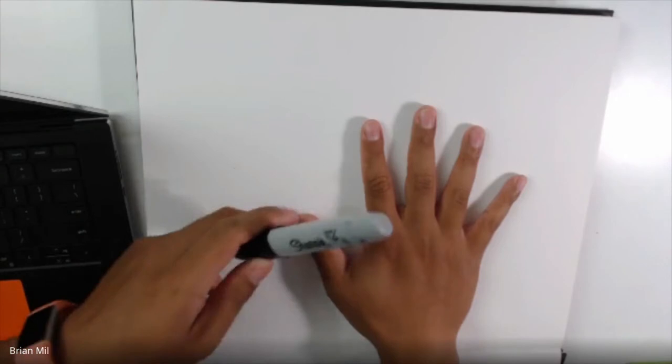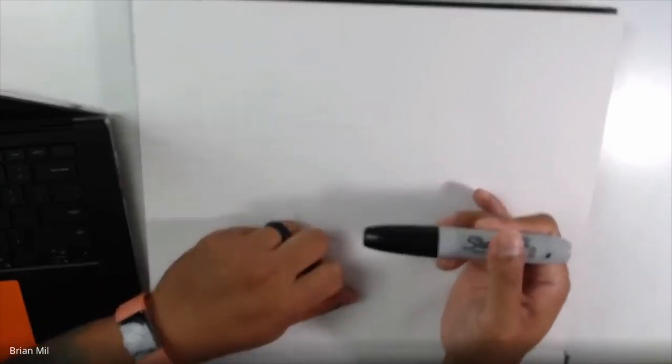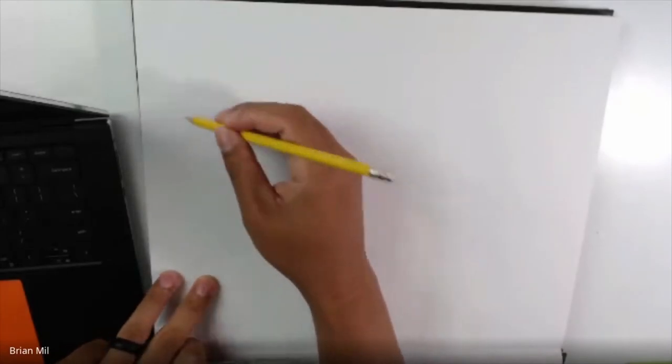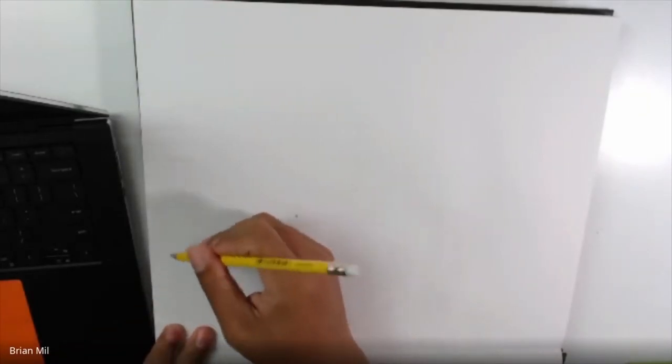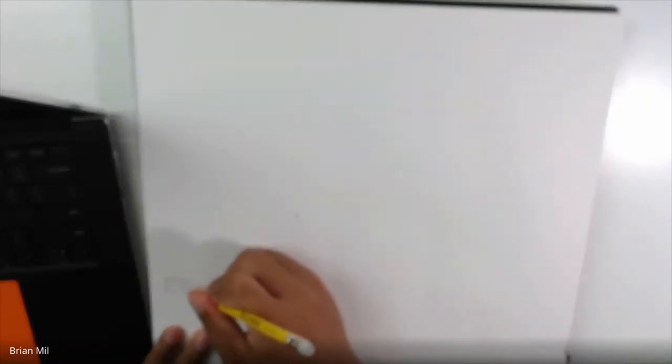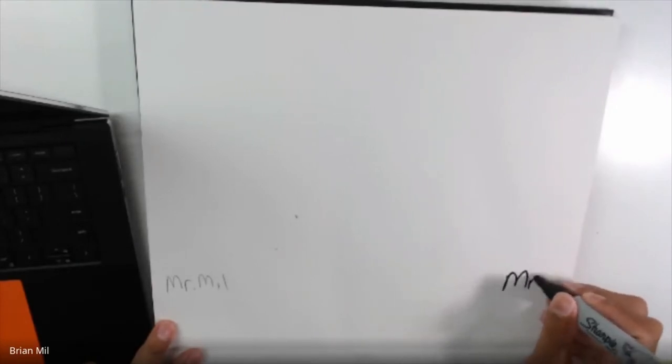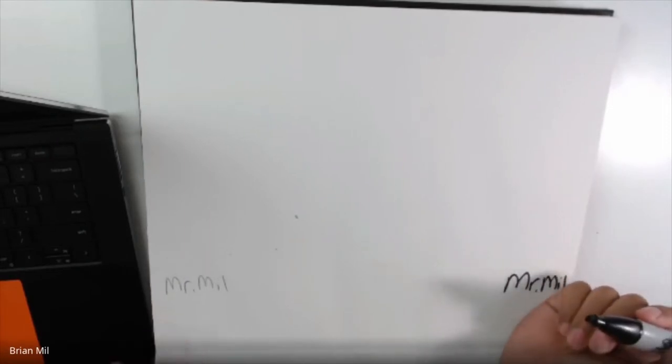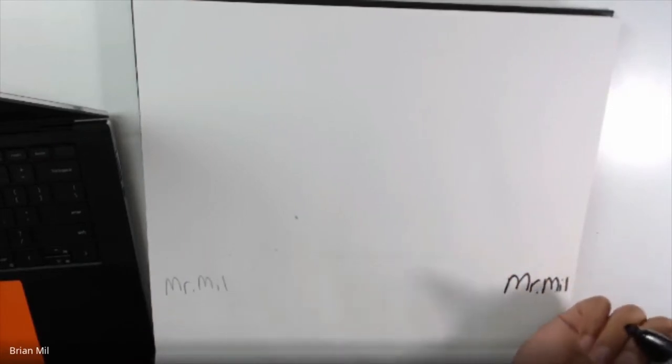And you can use a pencil, so it's easier to erase. Or if you want to use colored pencil or crayon, that's allowed too. But for me, I'm going to use a black marker, because sometimes when it comes to video, it's really hard to see pencil. So here's my name, Mr. Mill. That's really hard to see on camera. But if I draw this in marker, Mr. Mill, it's a lot easier to see on camera.